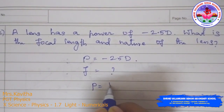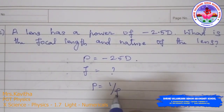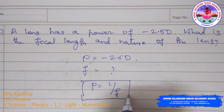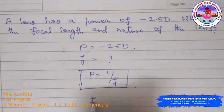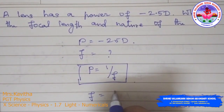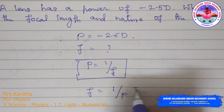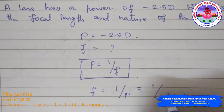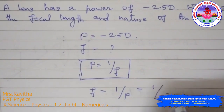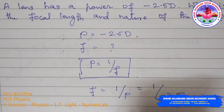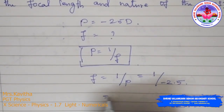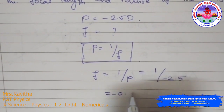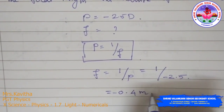We know that P = 1/F, so F = 1/P = 1/(−2.5). F = −0.4 meter.